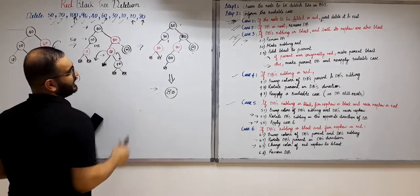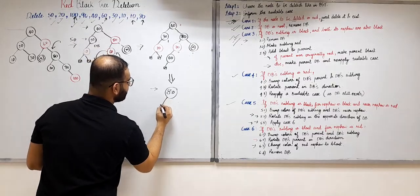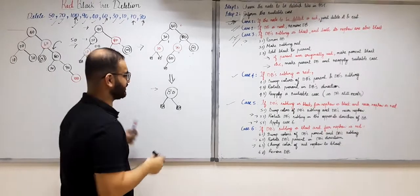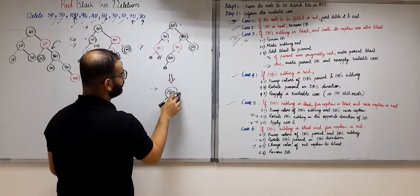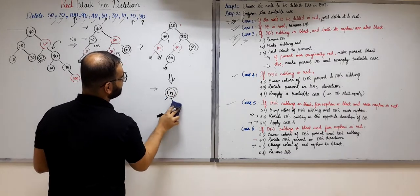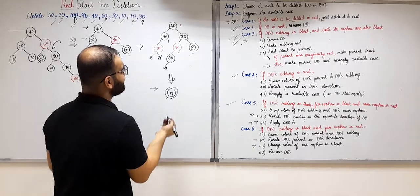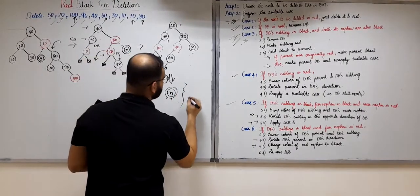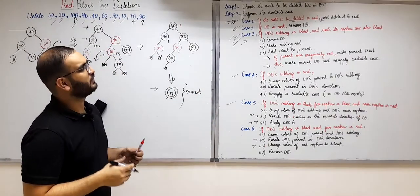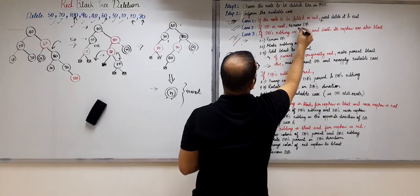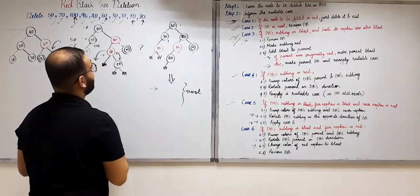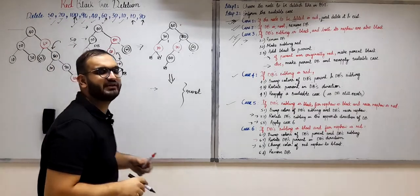Now we are left with the last node 80, with two external nodes as its children. One external node will replace 80 and make it from black to double black. This double black node is the only node in the red-black tree and also the root of the tree. If the double black is the root, we simply remove double black. So the double black is removed and we have deleted all elements from the red-black tree.